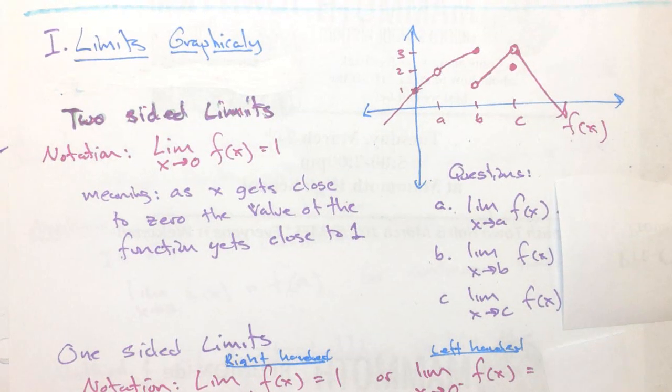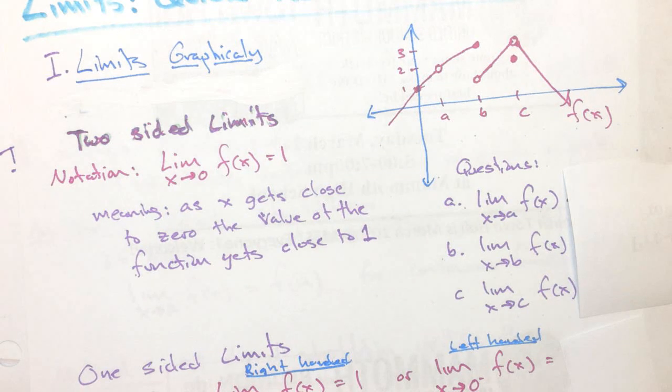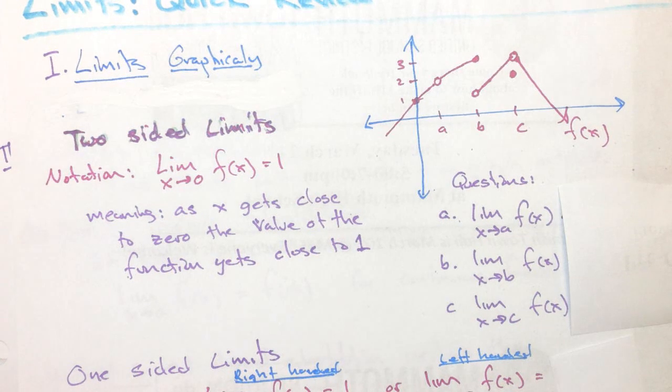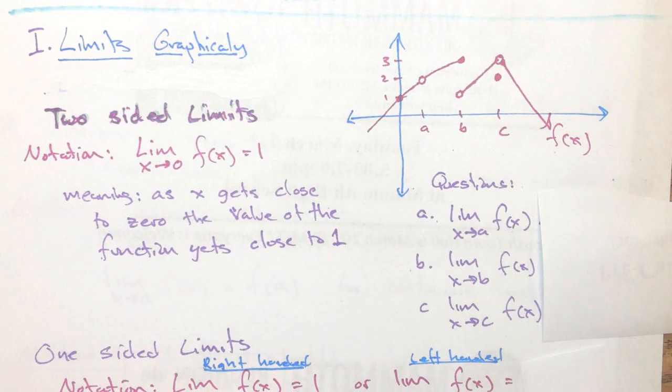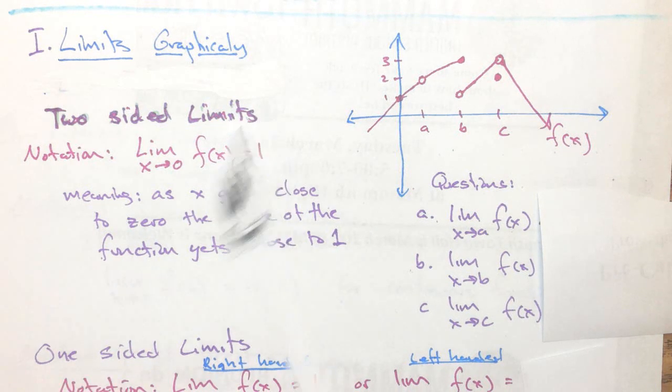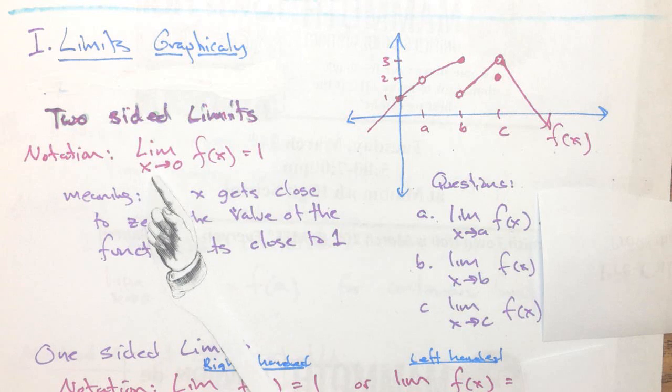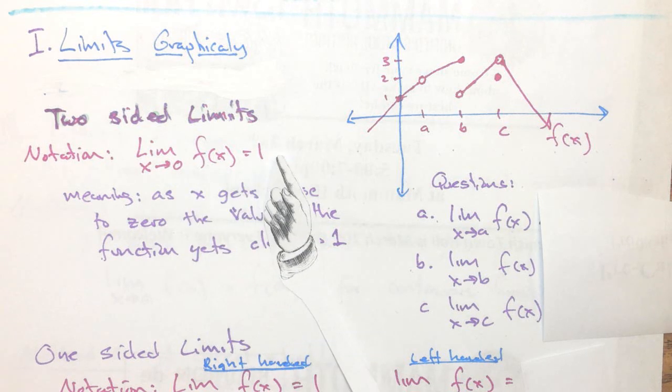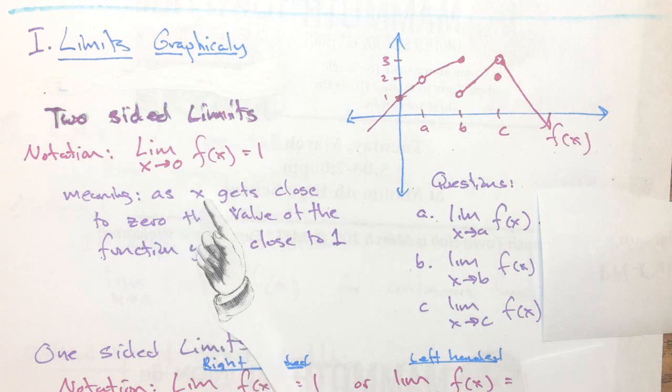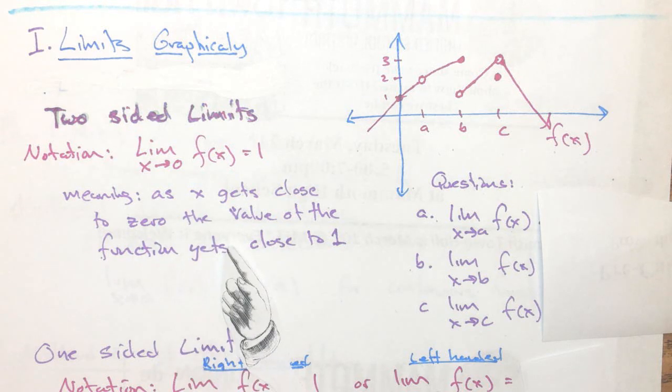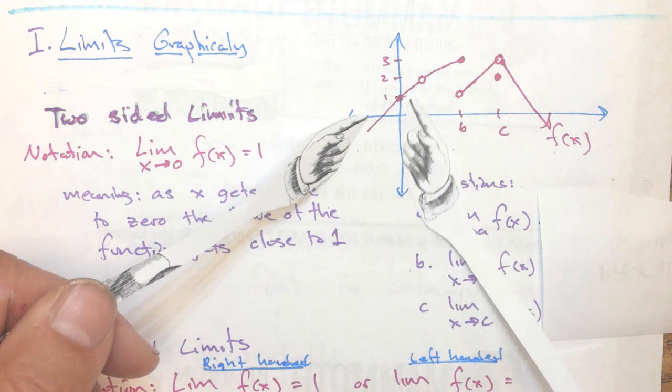Starting with limits graphically. If you can remember this clearly, when we look at limits, the first thing we did was two-sided limits. The limit as x approaches zero, f(x) equals one, means as x gets close to zero, the value of the function gets close to one. So as we approach a specific x value like zero...